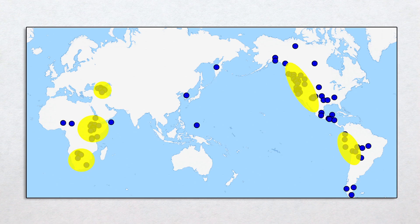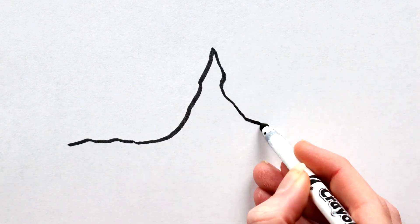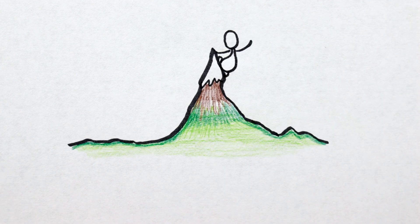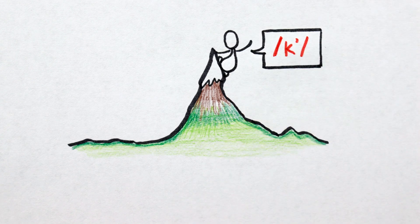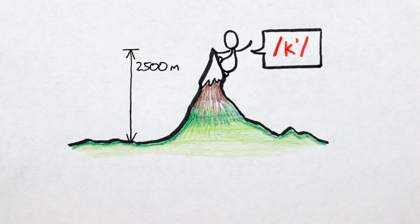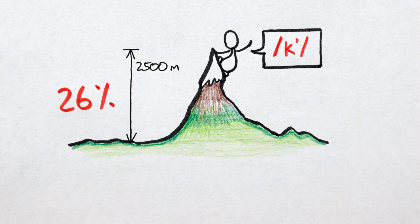The linguist Dr. Caleb Everett suggests that this correlation is direct evidence supporting the notion that geography can drive language evolution. The idea being that decreased air pressure at high altitude makes ejectives easier to pronounce. The force required to produce an ejective like Kaa at an altitude of 2500 meters is 26% less than at sea level.